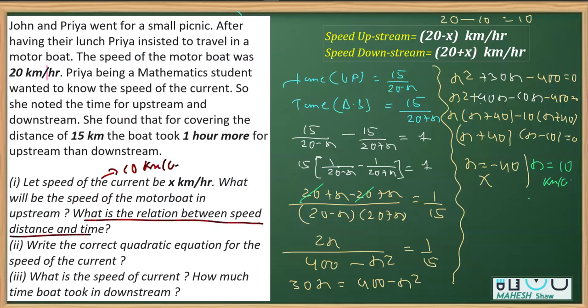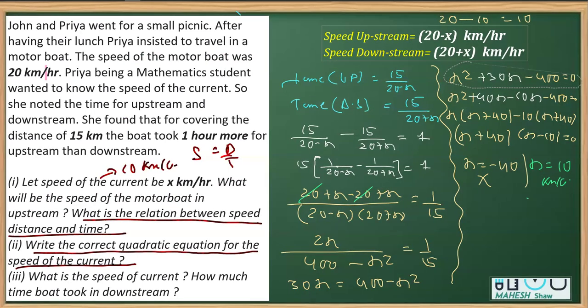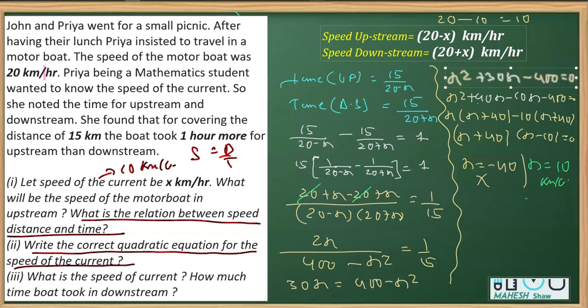Answer for the first part here is going to be 20 minus 10 that is 10 km per hour. Then, what is the relation between speed, distance and time? That's very easy. We know that speed is equal to distance over time. Now, what is the correct quadratic equation for this speed? So we have obtained the quadratic equation. This is the equation. This is the quadratic equation obtained here.